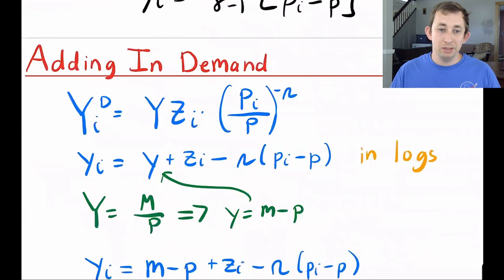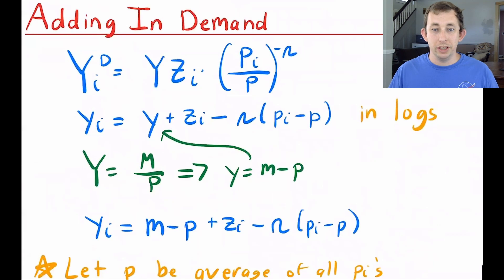First, let's add in some demand into this equation. We've added in supply, we know what the household is going to supply, but not what's demanded of the household. Well, household demand is going to be overall output times some product specific factor zi times pi over p, this is a relative price again, raised to an elasticity of demand, I'll call that negative n.